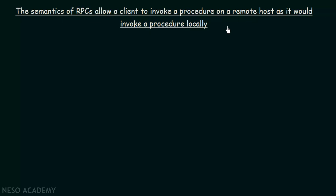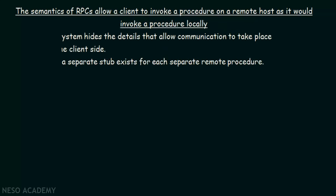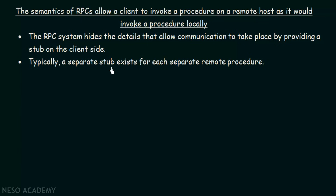Now let us see how the semantics of RPC allow a client to invoke a procedure on a remote host as it would invoke a procedure locally. The RPC system hides the details that allow communication to take place by providing a stub on the client side. When processes reside in two different systems connected over a network, the client process does not need to be concerned about how the communication takes place — RPC hides those details. Typically, a separate stub exists for each separate remote procedure.